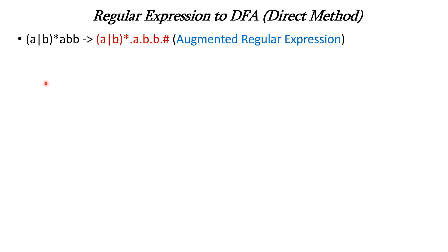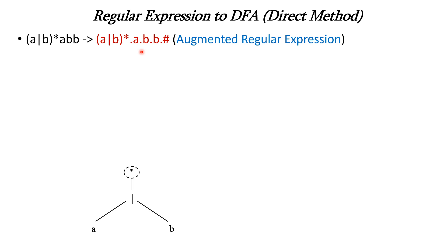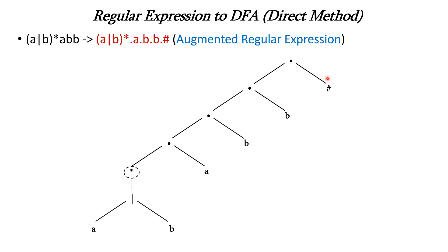Now let us understand this concept using an example. We have the expression (a|b)* followed by abb. The first step is to create the augmented regular expression by attaching the hash symbol to the given expression and including the dot operator for concatenation. Next we construct the syntax tree for this augmented regular expression: (a|b)* followed by concatenation with a, then b, then b, and finally concatenated with hash.